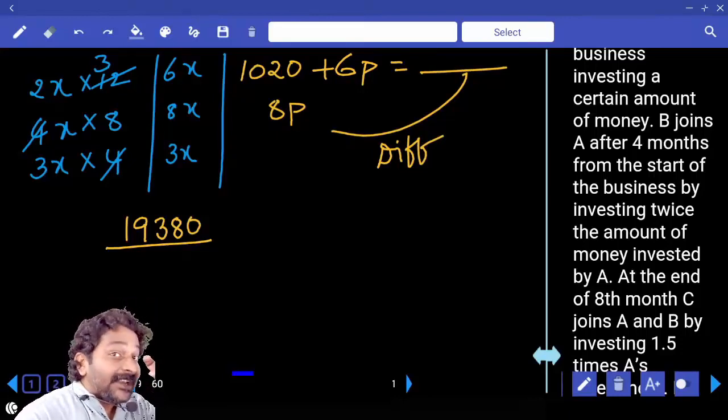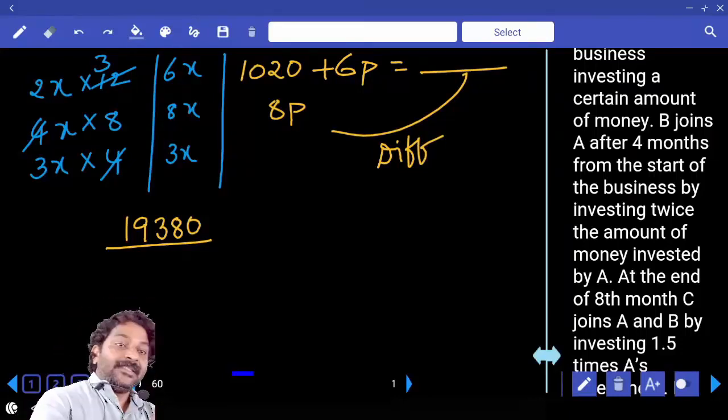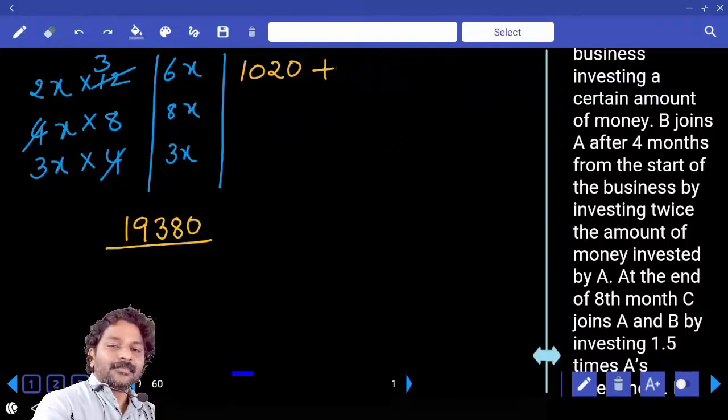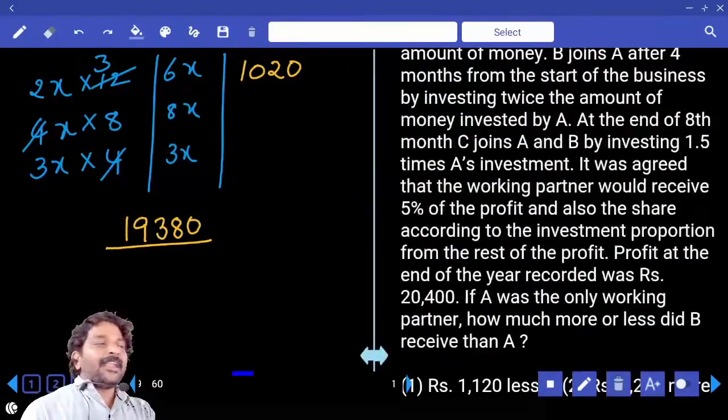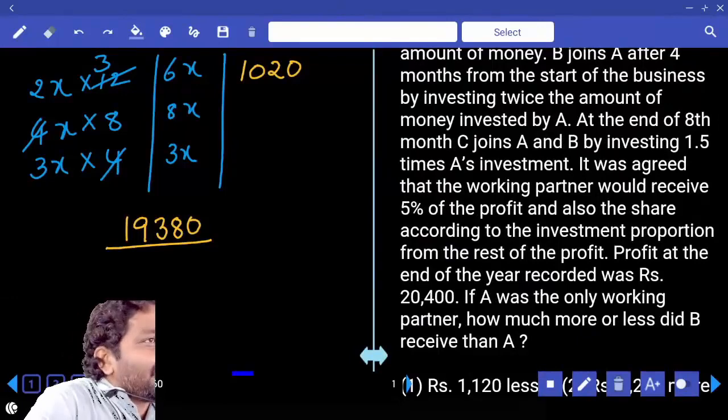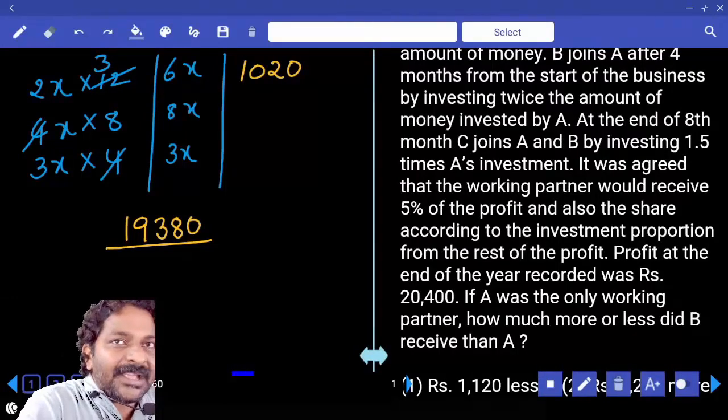But it is a little lengthy process. Let me show you a logical way. Already we calculated 1,020 extra for A. How?